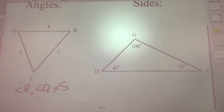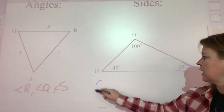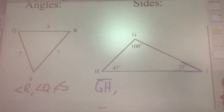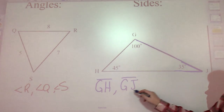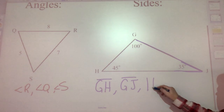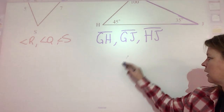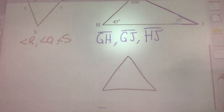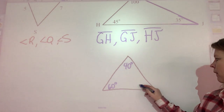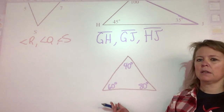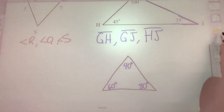Now order the sides from smallest to greatest. Pause if you need to draw the triangle. Since angle J is the smallest angle, the smallest side across from it is segment GH. The medium side is segment GJ, because it's across from the medium angle. The largest side is segment HJ. You have to go by degrees — you can't go by looks, because diagrams are often not drawn to scale.